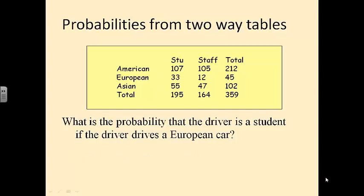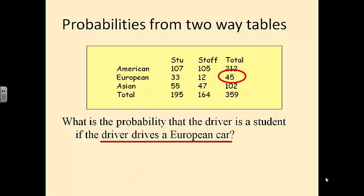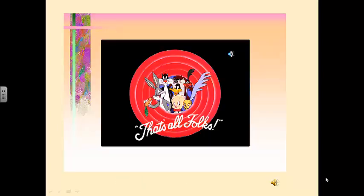What's the probability that the driver is a student if the driver drives a European car? If we know they drive a European car, there are only 45 of those people. What's the probability that one of those people is a student? We set that up as 33 out of 45. That's all I have for you, so I'll see you in class tomorrow.